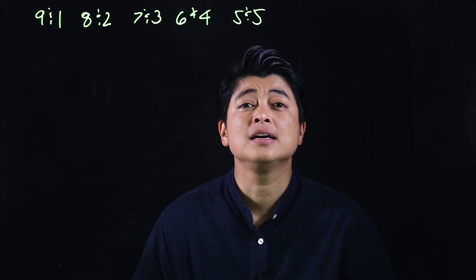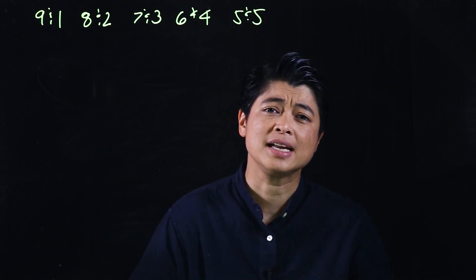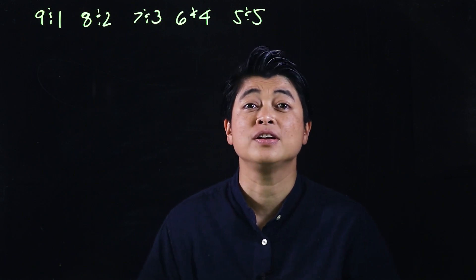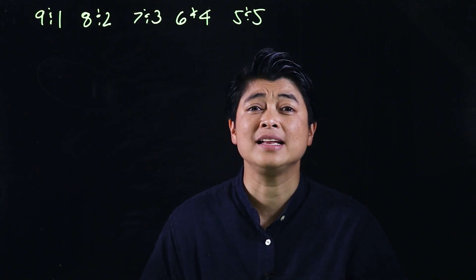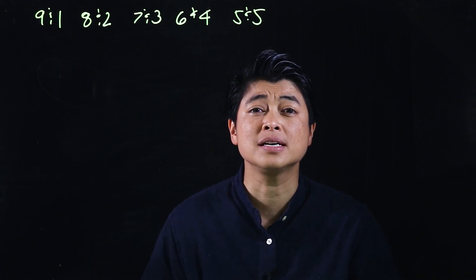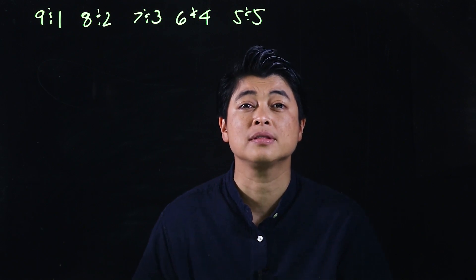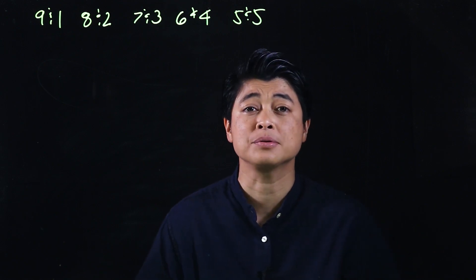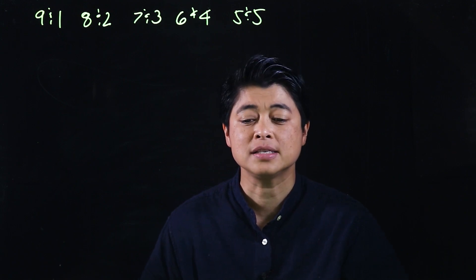The thought process is slightly different between the two sets. When there are zeros, what we want to do is multiply without the zeros and then just put the zeros at the end.